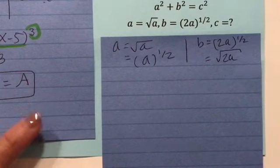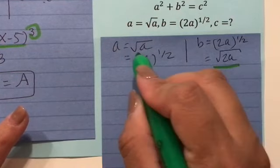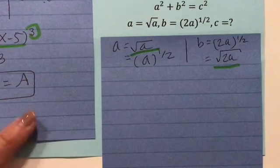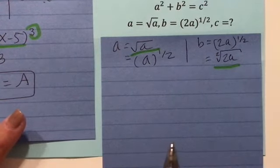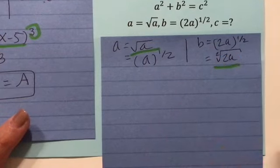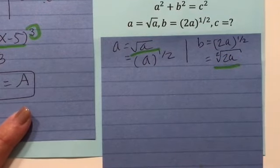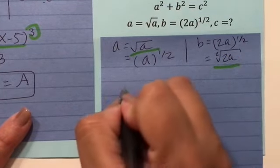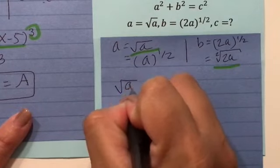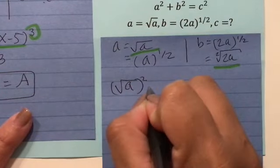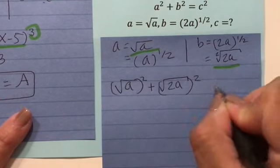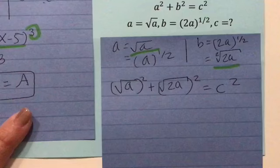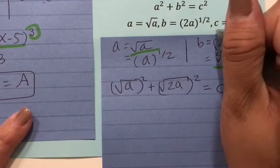So in this problem, I'm going to go ahead and use this right here. So remember, it's a square root because it has an index of 2. But we don't call it a square root because we already know it's a square because that means 2. So we're going to say the square root of a squared plus the square root of 2a squared equals c squared. But in my problem, I'm looking for c.